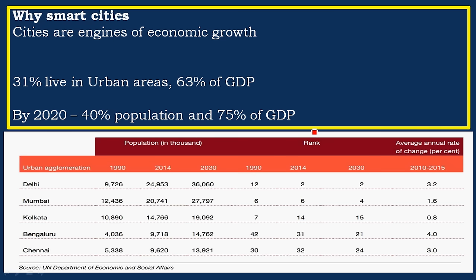Cities are considered engines of economic growth. In India, approximately 31% of the population lives in urban areas, and these urban areas contribute 63% of the country's GDP. By 2020, urban population will increase to 40% of the country's population, and these urban areas will be contributing 75% of GDP. So these are the brighter sides of cities.